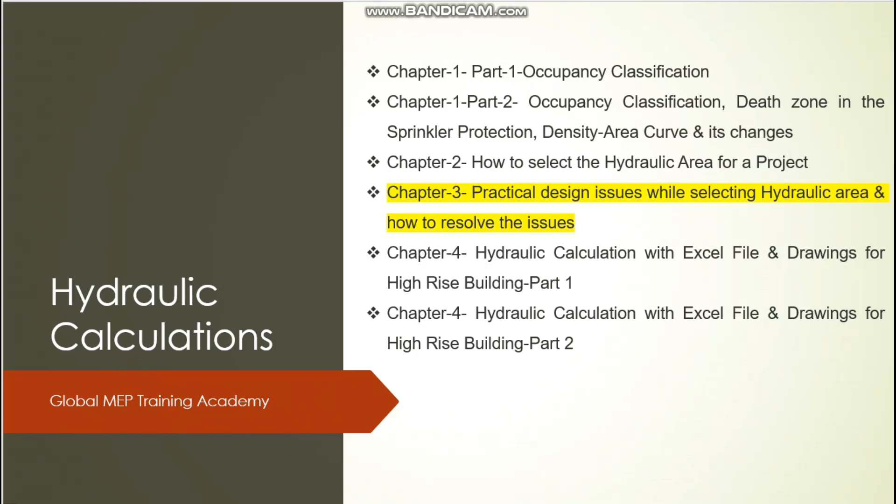Good morning. In the hydraulic calculation Chapter 1 Part 1 video, we discussed occupancy classification. Chapter 1 Part 2 was about balancing occupancy classification and the dead zone in sprinkler protection. We also discussed the density-area curve and its changes. In Chapter 2, we saw how to select the hydraulic area for a project.